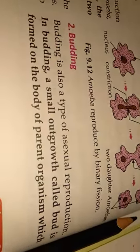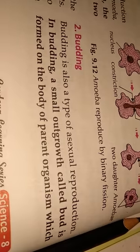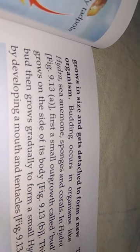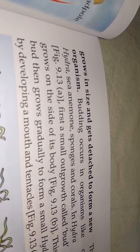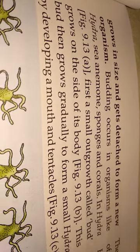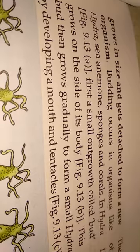Budding is also a type of sexual reproduction. A small outgrowth is formed on the body of the parent organism. Its size grows and it gets detached to form a new organism. When it falls in a favorable location and receives all the necessary conditions, it grows into a new individual. Examples include hydra, sponges, and corals, which all reproduce by budding.